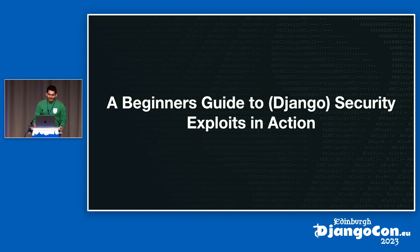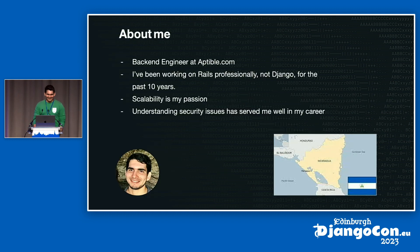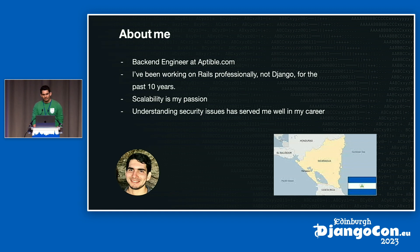I also want to point out that over the past 10 years, my main framework has actually been Ruby and Rails, so I want to apologize beforehand for any sort of Django mistakes I might make — but that's also why this application is exploitable. I currently live in Managua, Nicaragua, Central America, and I'm a backend engineer at Aptable. Scalability is my passion, and understanding security issues has served me very well in my career, which is why we wanted to share this information with you today.